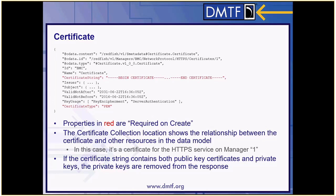The Certificate resource contains two properties required on CREATE: certificate type and certificate string. Certificate type informs the service of the format of the certificate string property. On subsequent GET requests, the other properties are decodings of fields on the certificate string — things like issuer and subject information, the validity date, and key usage. If there is any private part of the certificate, that needs to be removed from the service's responses.